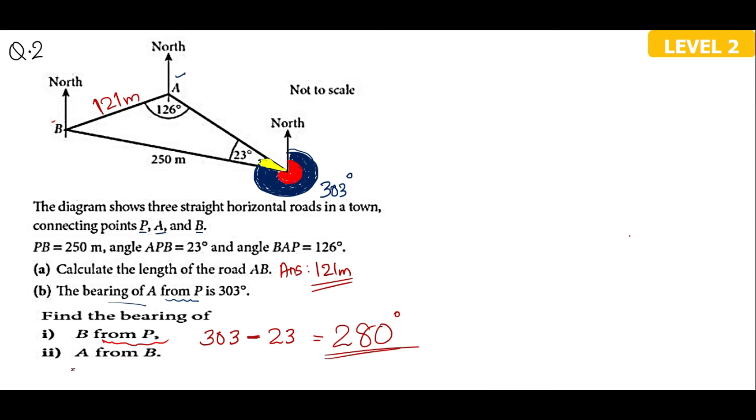Moving to the last part, the bearing of A from B. So you have A and B. They are already connected by a line there. You have to find the bearing of A from B. So you start from B. You measure the angle in the clockwise direction. And you get to know that this is the angle that they are looking for. I can give you two methods here. I'll go with the method 1 first. In method 1, I will find this angle first.